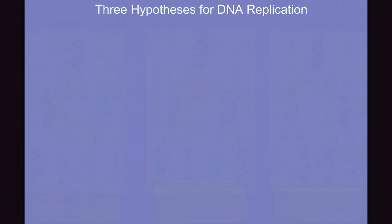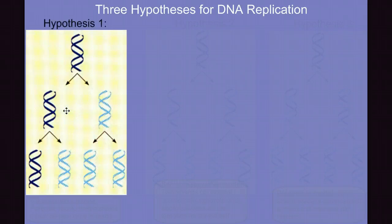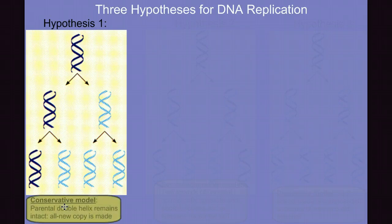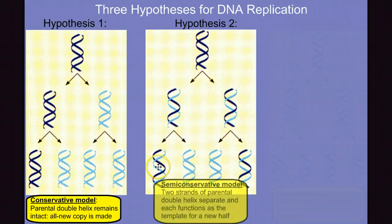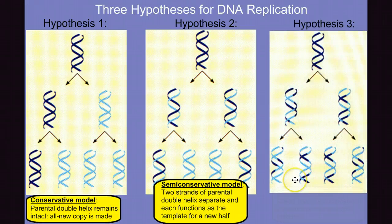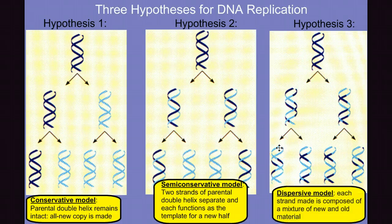There are three different hypotheses for the process of DNA replication. The first hypothesis is a conservative model where the entire original DNA double helix is conserved and the copy is made of entirely new nucleotides. The second hypothesis is called the semi-conservative model where each new copy of the DNA is composed of one of the original strands and one new strand built using the original strand as a template. And the final hypothesis is the dispersive model where each of the two copies are composed of a mixture of old and new material on each strand.